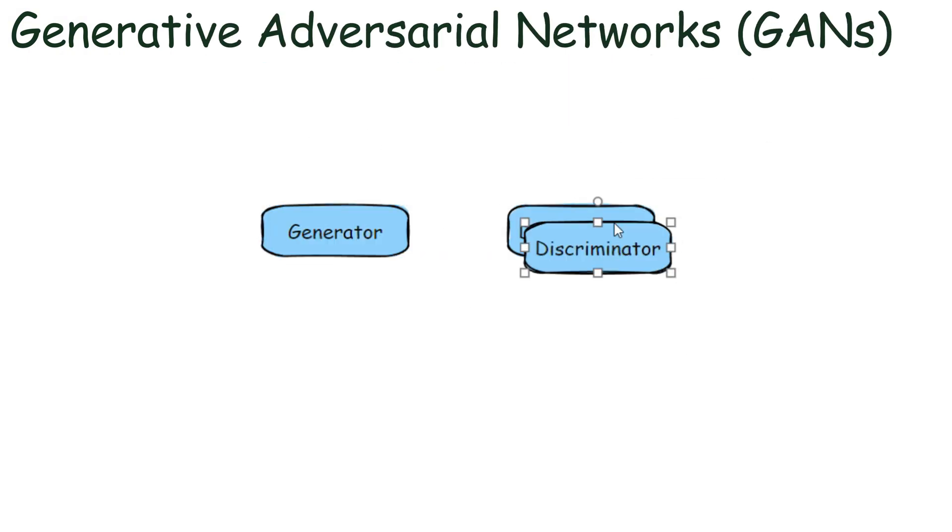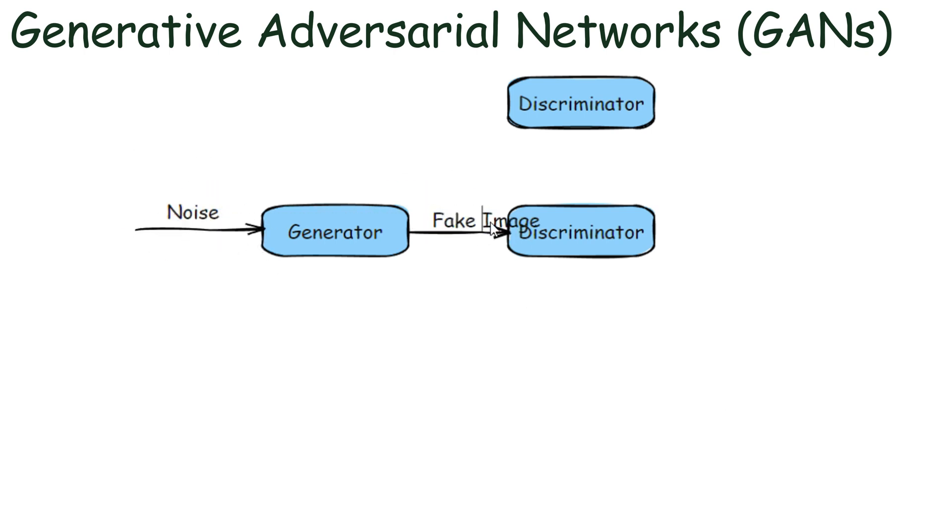Let us now discuss Generative Adversarial Networks or GANs. Generative adversarial networks consist of two neural networks: the generator and the discriminator that compete against each other. The generator creates fake data while the discriminator tries to distinguish between real and fake data.